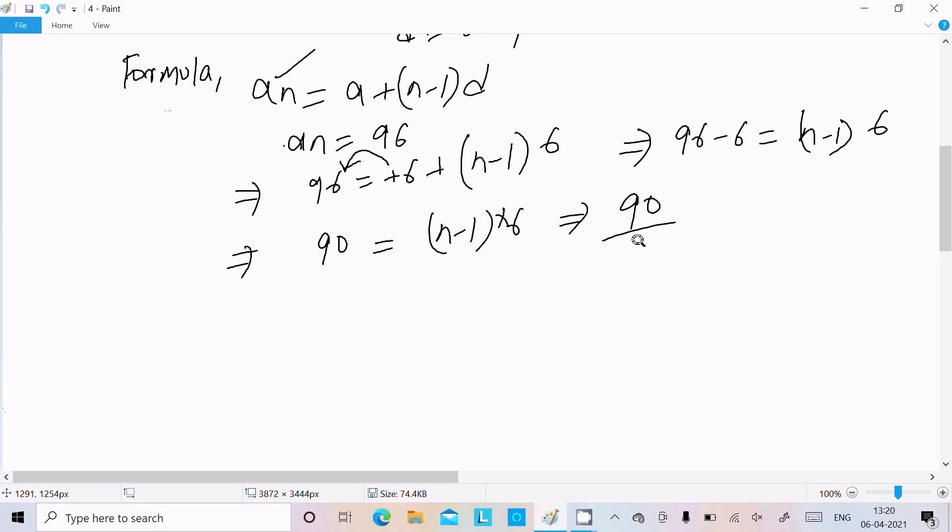So 96 minus 6, this becomes 90. And here (n-1) × 6, when that moves on the left it goes to division. So 90 ÷ 6, it cancels, leaving 15. So n - 1 = 15, and n = 15 + 1 = 16.